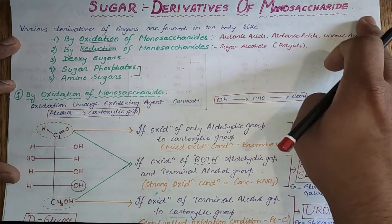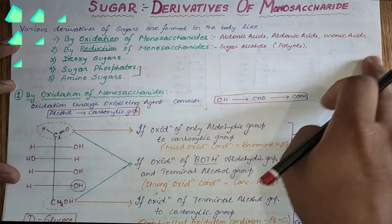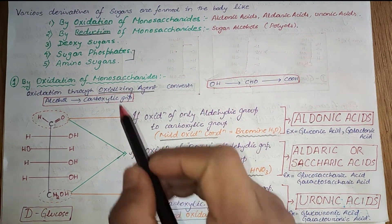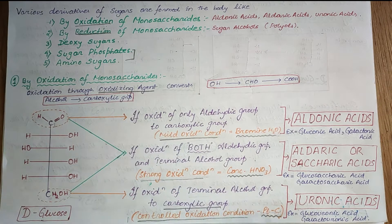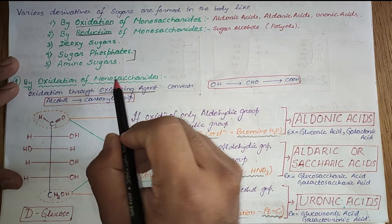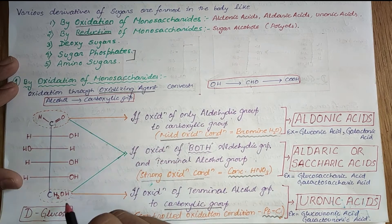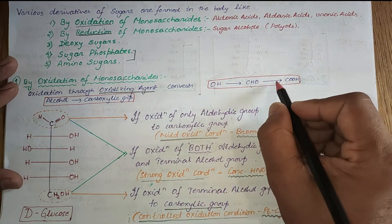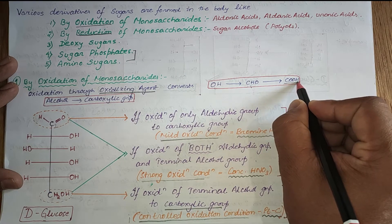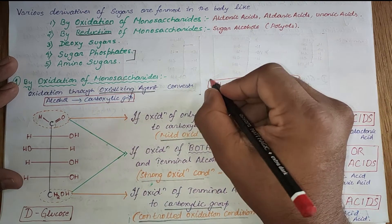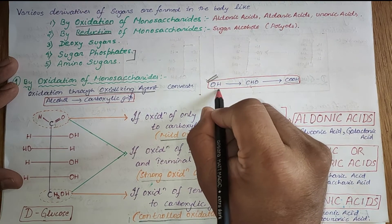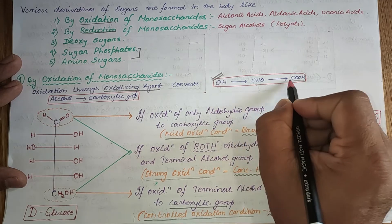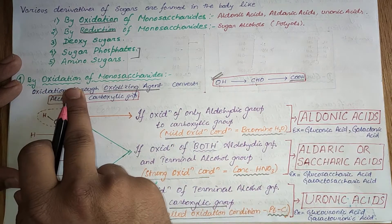We are going to read about oxidation of monosaccharides. What do we mean by oxidation of monosaccharides? When monosaccharides containing alcoholic groups undergo oxidation in the presence of an oxidizing agent, they are converted to carboxylic groups. The process of conversion of an alcoholic group to an aldehydic or ketonic group, and further to a carboxylic group, is known as oxidation.